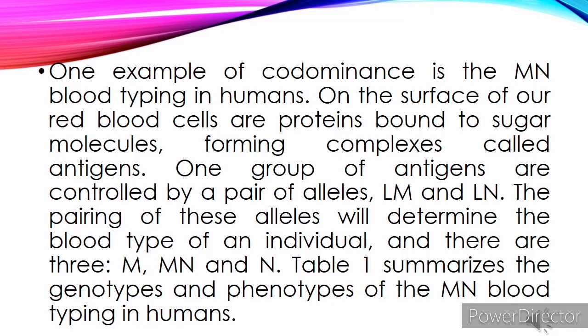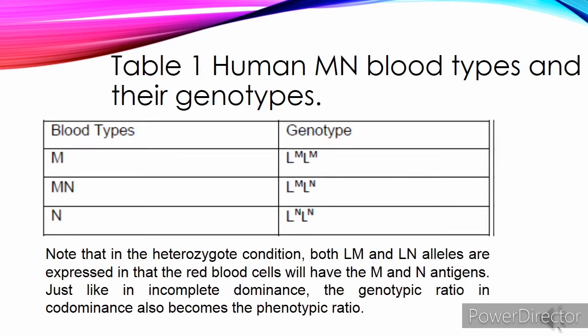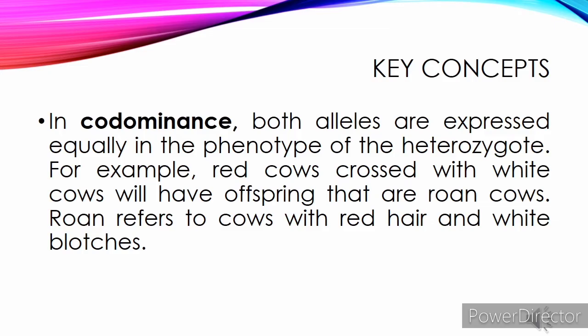The pairing of these alleles will determine the blood type of an individual, and there are three types: M, MN, and N. Table 1 summarizes the genotypes and phenotypes of the MN blood typing in humans. Note that in the heterozygote condition, both the LM and LN alleles are expressed, in that the red blood cells will have both the M and N antigens. Just like in incomplete dominance, the genotypic ratio in co-dominance also becomes the phenotypic ratio. Key concept: In co-dominance, both alleles are expressed equally in the phenotype of the heterozygote.